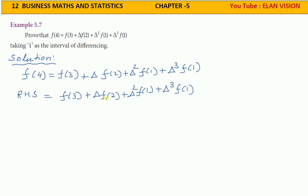f(4) equals... in the given question, right hand side value: f(3) plus delta f(2) plus delta squared f(1) plus delta cubed f(1).